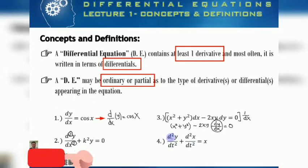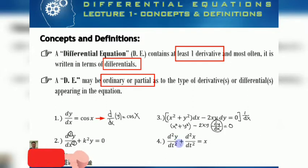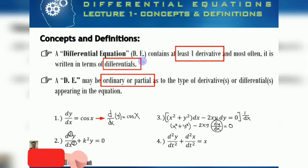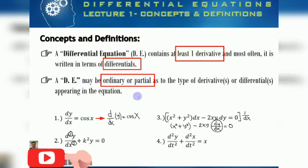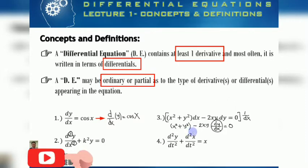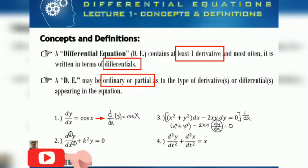Number four has the second derivative of y with respect to t plus the second derivative of x with respect to t equal to x. It also involves derivatives. All four examples are differential equations because they meet the criteria: at least one derivative, expressed in terms of differentials. Numbers one through four are all ordinary differential equations. We will encounter partial differential equations in further slides.